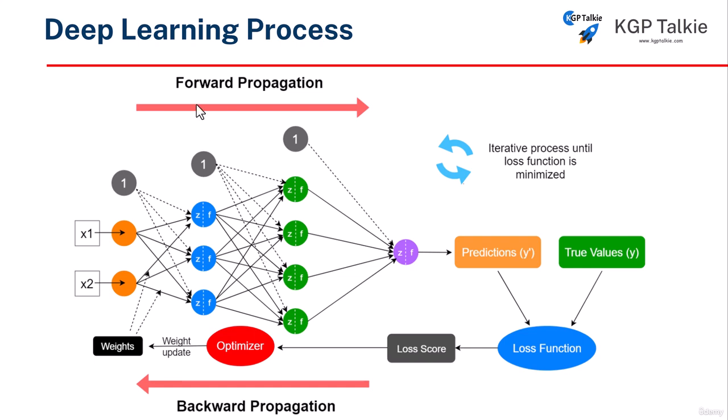So when information passes from forward direction to the target output, it is known as forward propagation. And if there is error, the loss function calculates that, then information passes from the backward to the forward direction. In that case, it is known as backward propagation.